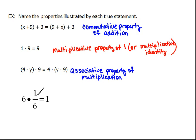The last one says 6 times 1 sixth equals 1. These are reciprocals of each other that we are multiplying together to get the identity. So, this would be called multiplicative inverses.